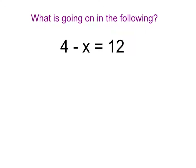The last example is a tricky one. It's really important to start by rewriting everything with keep-change-change. Also remember that if x doesn't have a number in front of it, there's really a negative 1. So in order to correctly solve this problem, we use keep-change-change, and we rewrite it as: 4 + (−1) × x = 12.